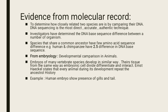Next is evidence from the molecular record. To determine how closely related two species are, we compare their DNA. DNA sequencing is the most direct, accurate, and authentic technique. Investigators have determined the DNA-based sequence differences between a number of organisms. Species that share a common ancestor have few amino acid sequence differences. For example, humans and chimpanzees have only a 2.5% difference in DNA-based sequence, meaning the two species are closely related.